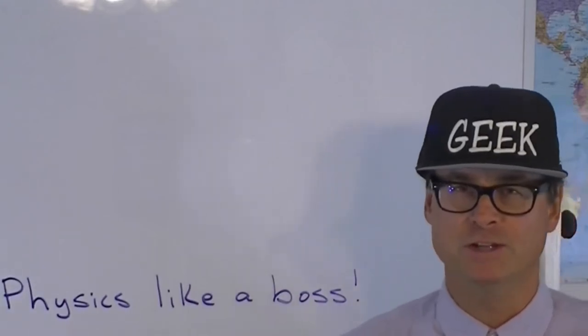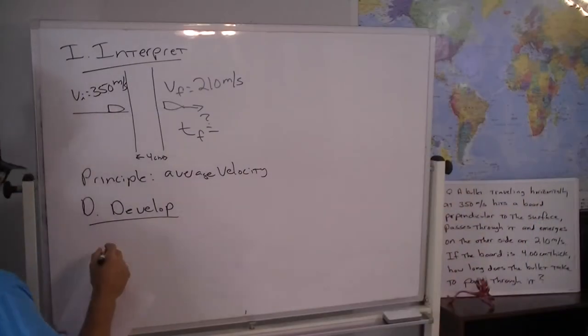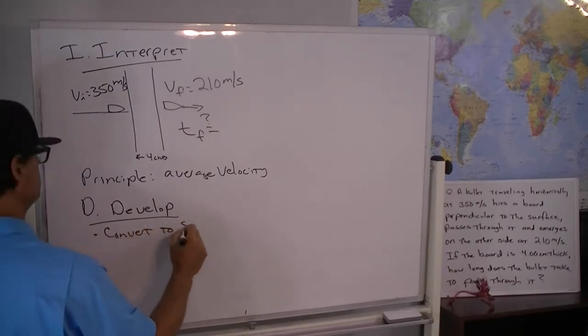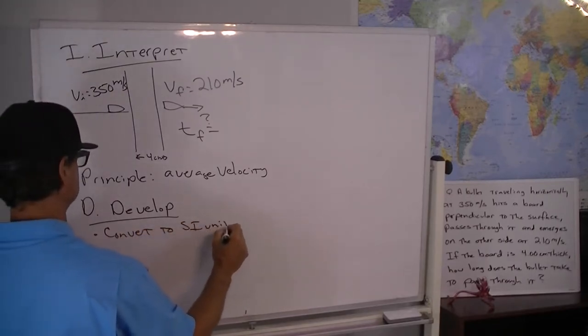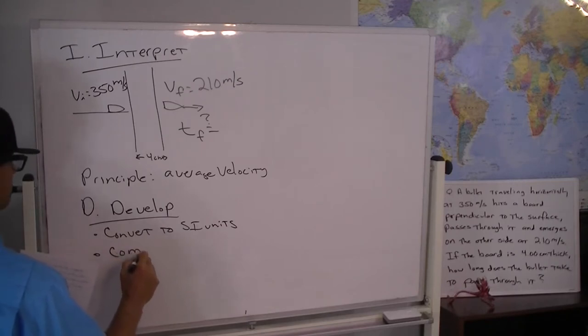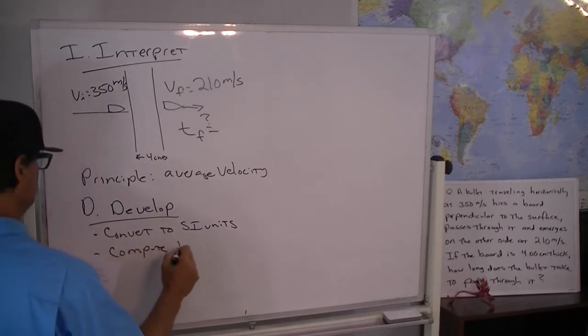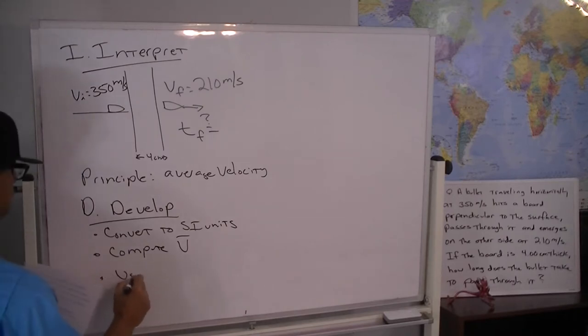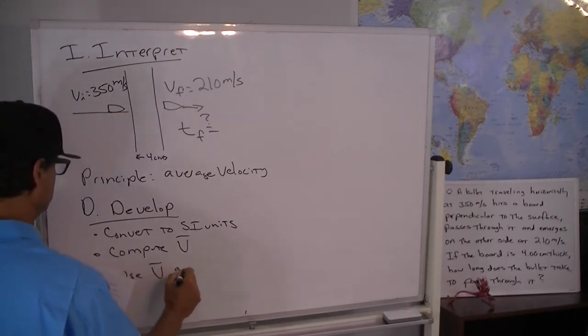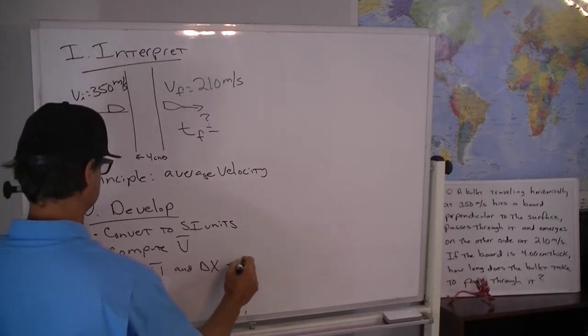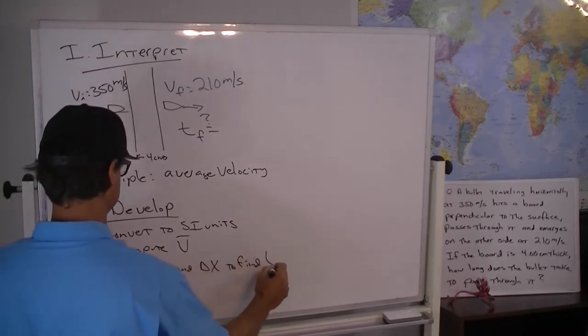All right so a sequence of steps: we're going to convert to SI units, always a good first step if everything is not given in SI units. Compute the average velocity as a second step and then we're going to use the average velocity and the Delta X to find t final, the amount of time it took to go through.